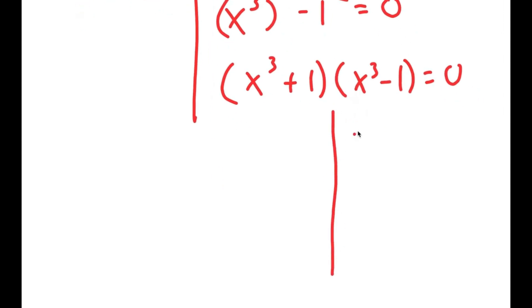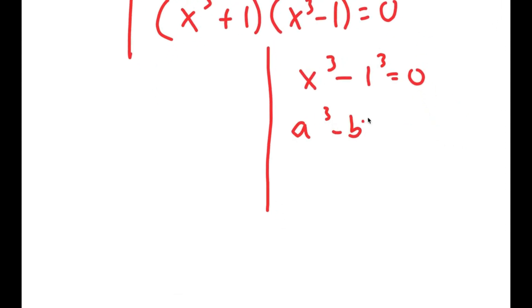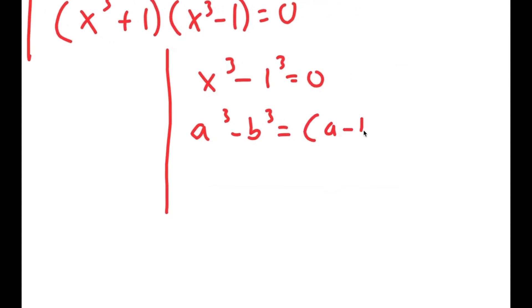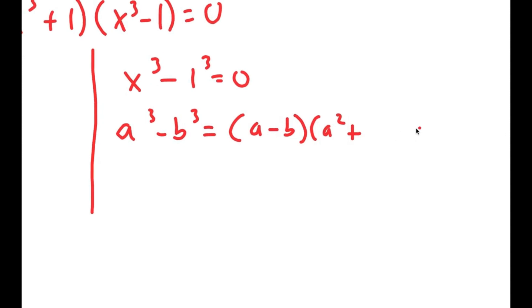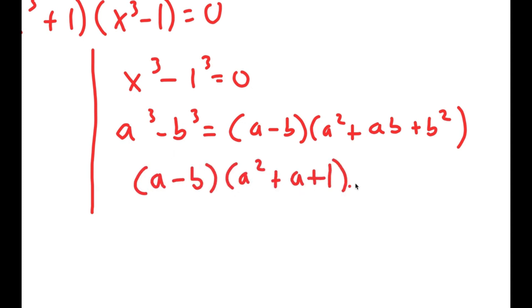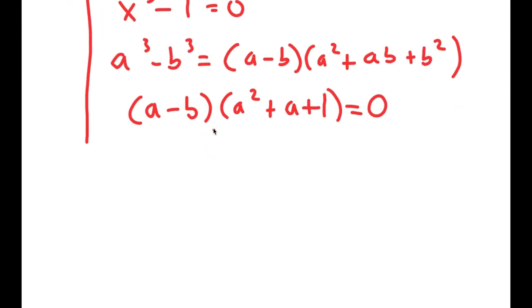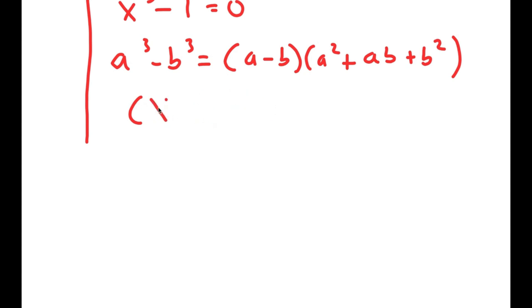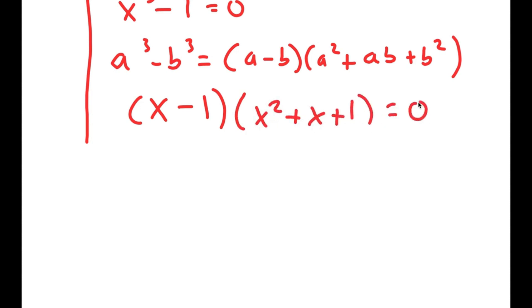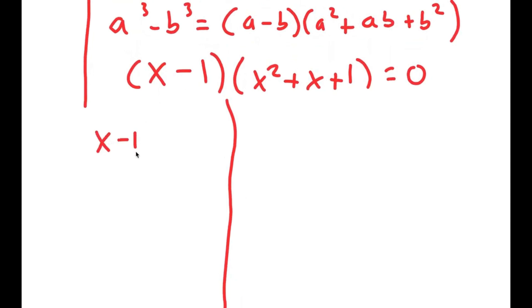Now for x to the power of 3 minus 1 equals 0, I'm going to use the property a cubed minus b cubed equals a minus b times a squared plus ab plus b squared. So this turns into x minus 1 times x squared plus x plus 1 is equal to 0, which gives me yet another two equations: x minus 1 equals 0, and x squared plus x plus 1 equals 0.